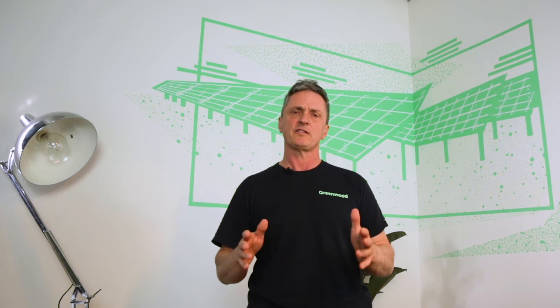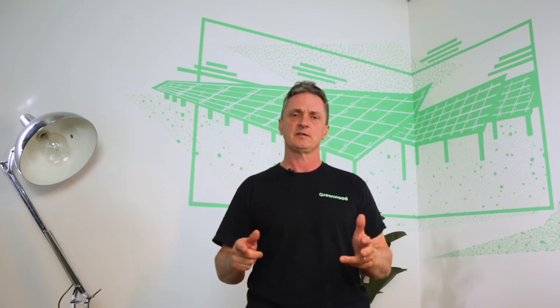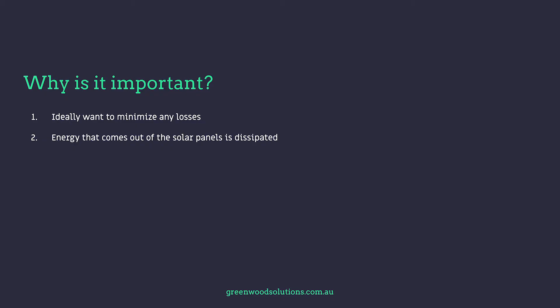Why is it important? It's important because you want to minimise losses. Those losses in the transmission through the cable from the solar panels to the inverter have to be kept to a minimum. The energy that comes out of the solar panels is dissipated, and we want to minimise that dissipation. The energy produced from the solar panels when it actually reaches the inverter is less because of that transmission process.